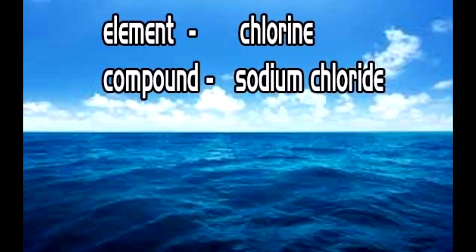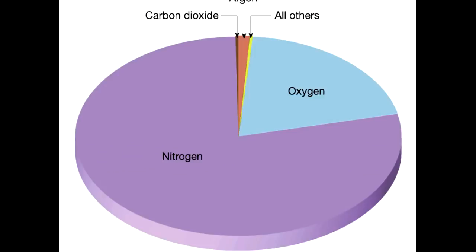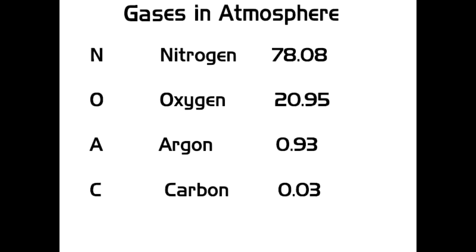The most abundant element in the atmosphere is nitrogen. NOVAC: nitrogen 78.08%, oxygen 20.95%, argon 0.93%, carbon 0.03%.